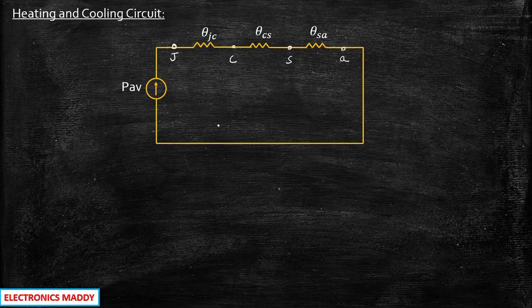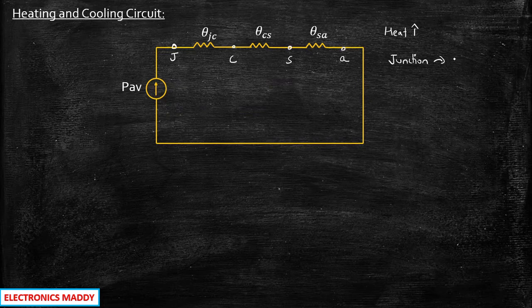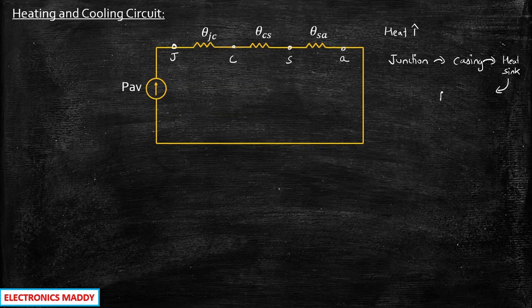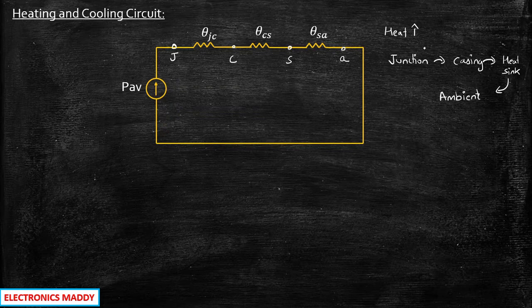Whenever the heat is very high, it will be transferred from the junction — which is the point where heat increases in the SCR — to the casing, then from the casing to the heat sink, where the SCR is mounted, and from the heat sink to the ambient air or fluid surrounding the SCR. The ambient can be air or liquid. So heat is transferred from junction to casing to heat sink to ambient, which is why we have J, C, S, A. Between J and C we have theta_JC, between C and S we have theta_CS, and between S and A we have theta_SA.